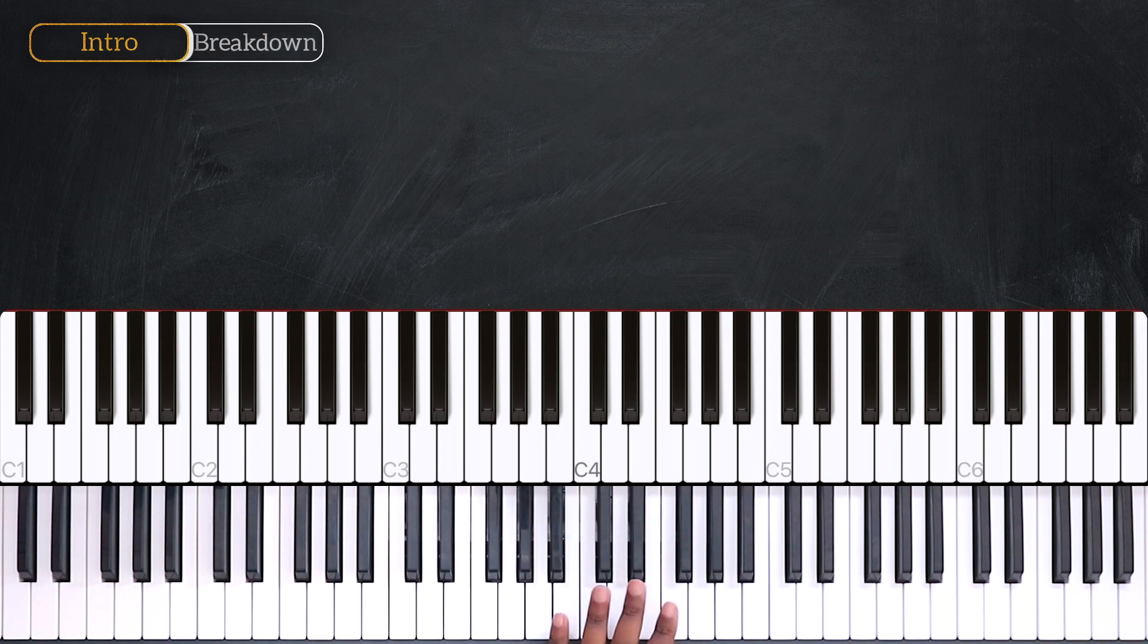So in one measure, I have E, then F sharp, D sharp, and E again. Then I'm going to repeat. One, two, three, four. One, two, three, four. So that's the pattern on the left.